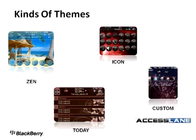On the BlackBerry, there are actually several kinds of themes. The first, which users of current BlackBerry smartphones such as the BlackBerry Bold 9700, the BlackBerry Storm 2, or the BlackBerry Curve 8900 will recognize, is the Zen theme. The Zen theme features icons along the bottom of the screen, and you can see one here in the upper left-hand corner of the screen.